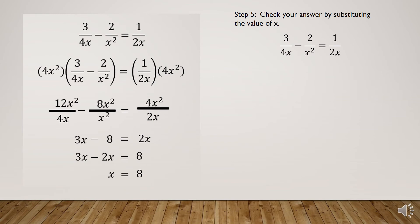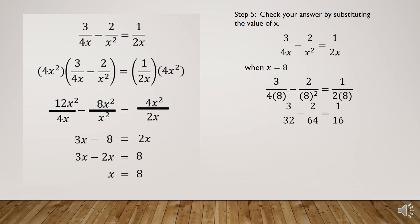We check by substituting x = 8 into the original rational equation. We get 3/(4×8) - 2/8² = 1/(2×8), which simplifies to 3/32 - 2/64 = 1/16.